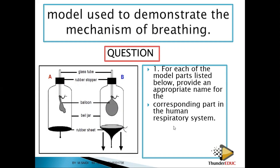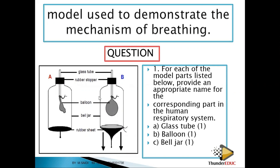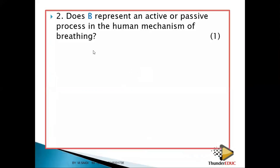For each model part, identify the corresponding part in the human respiratory system. The glass tube represents the trachea, which brings air into the lungs. The balloon acts as the lungs, where gaseous exchange takes place. The bell jar acts as a protective structure representing the rib cage, which protects the lungs.